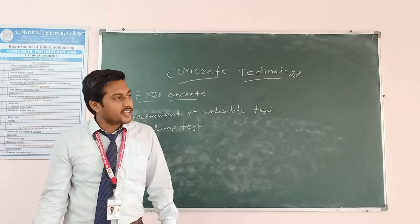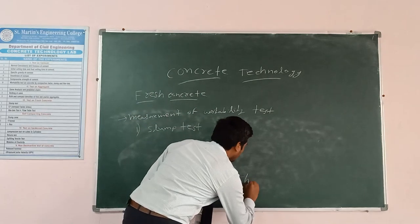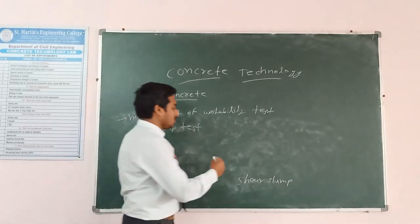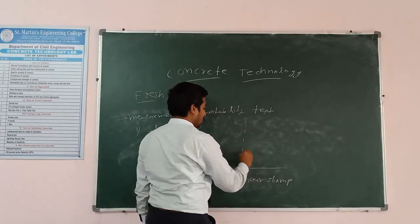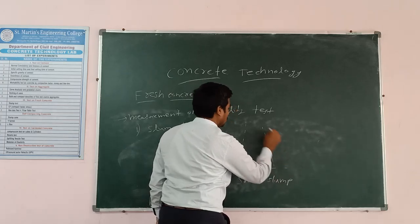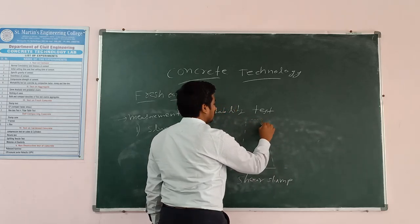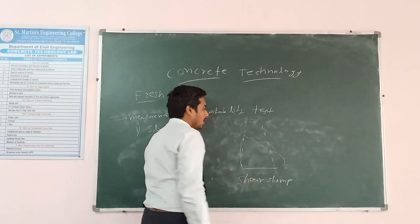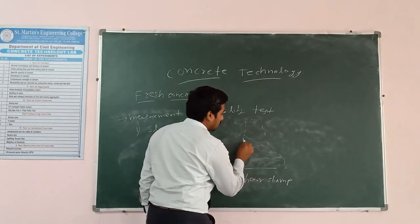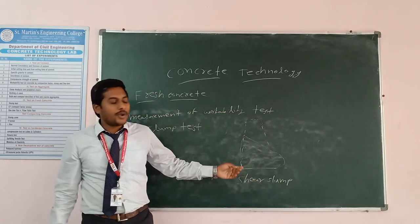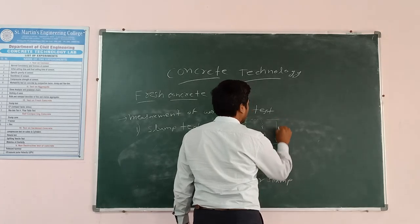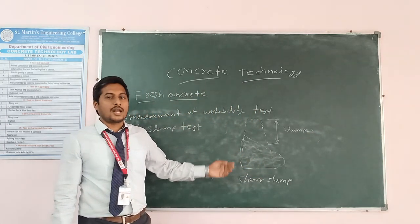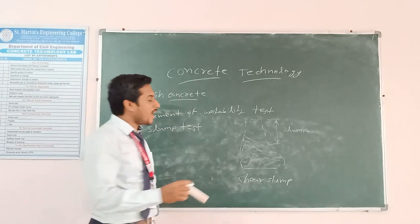The second type is shear slump. After removing the cone, if the concrete collapses to one side, we measure that collapsed portion and that measurement is called the shear slump value.